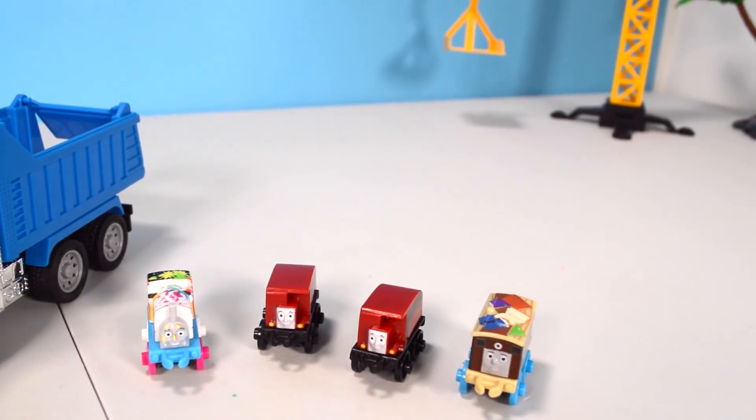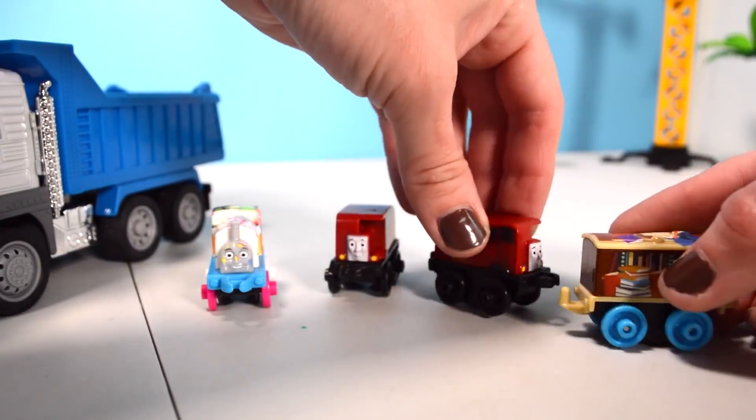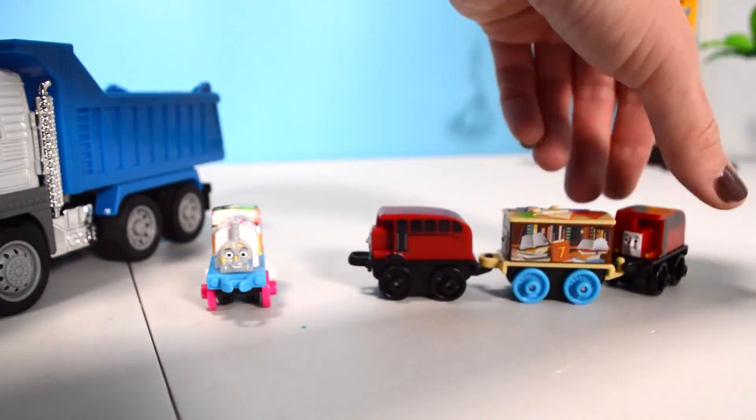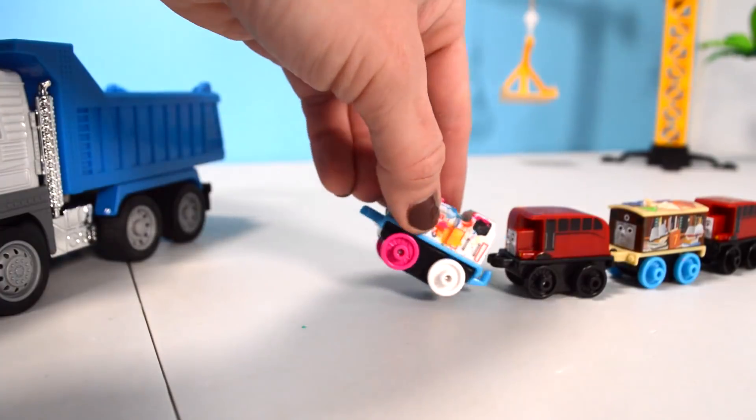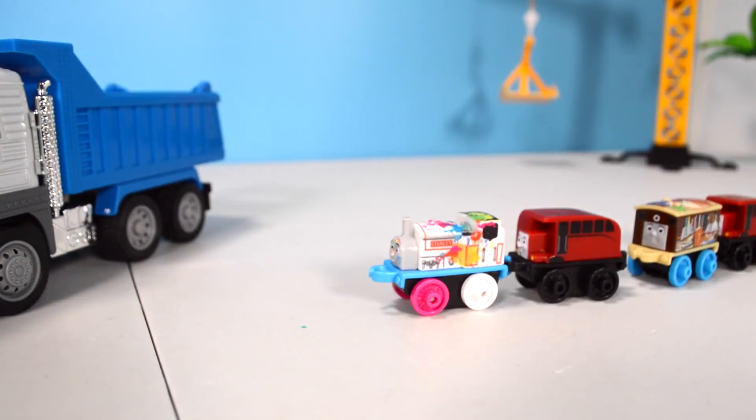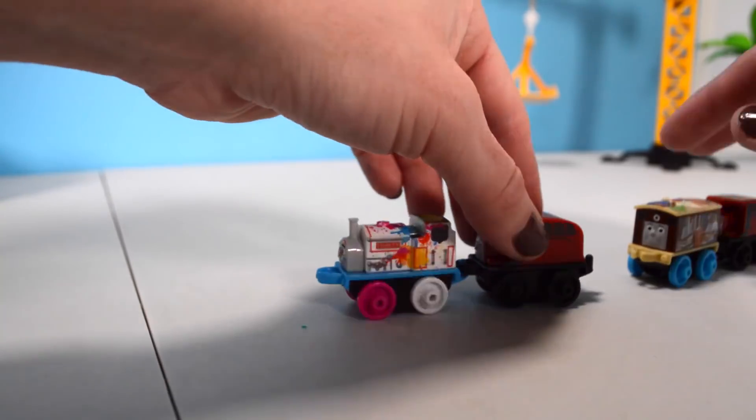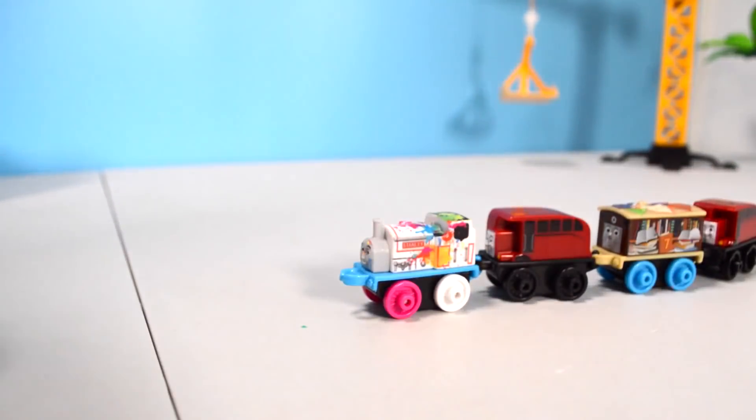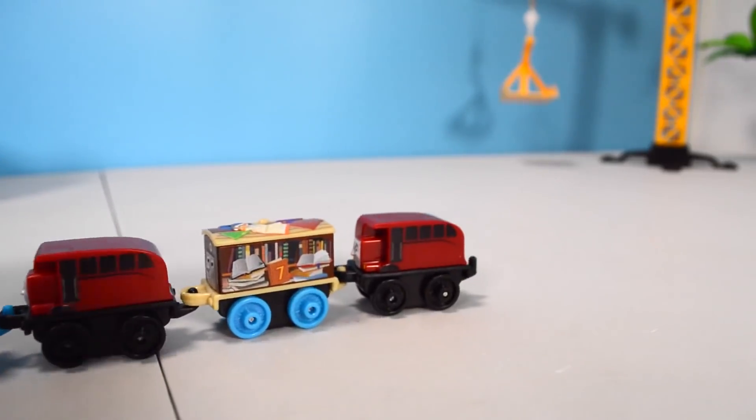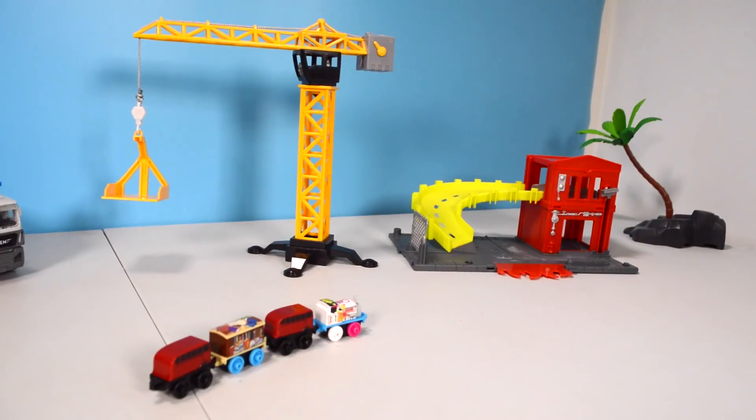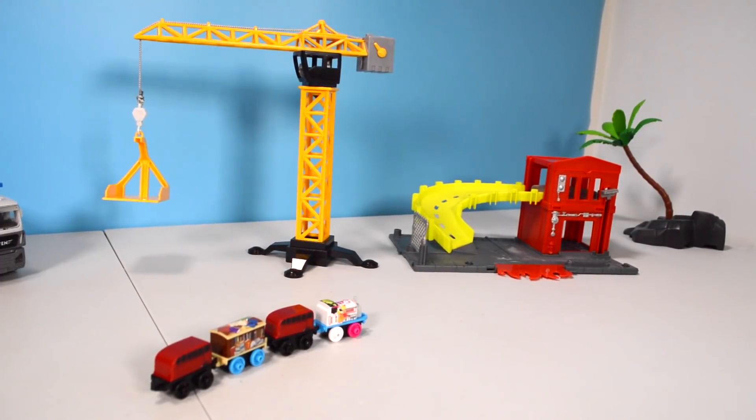And you know what? We can connect them. Do you see all the hooks? Yeah, we can make one long train. We'll have Stanley be the leader this time. Chugga chugga choo choo. Gotta connect. Perfect. Chugga chugga choo choo. We want to go and play with the fire station and the crane.